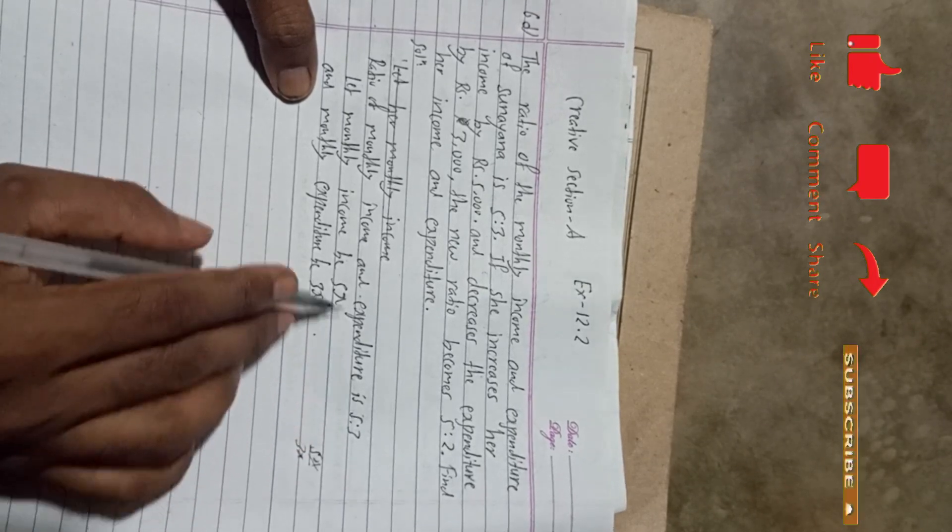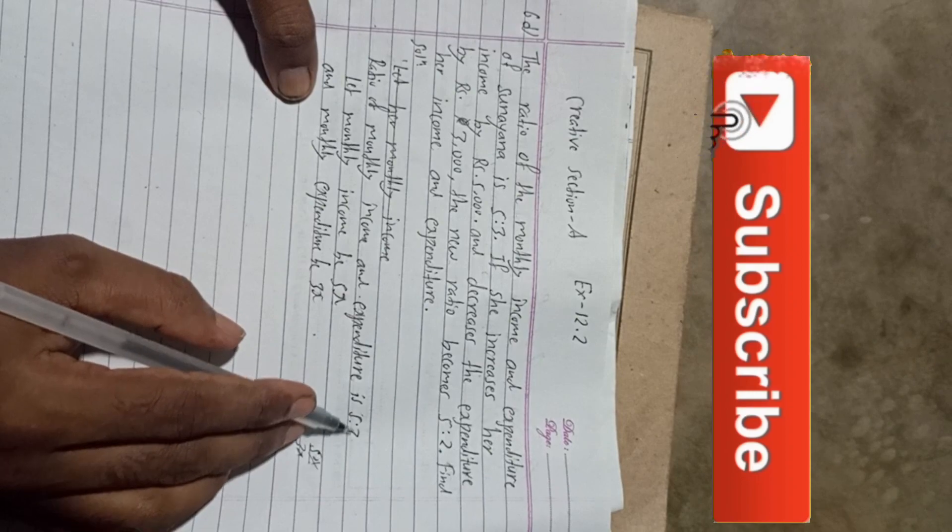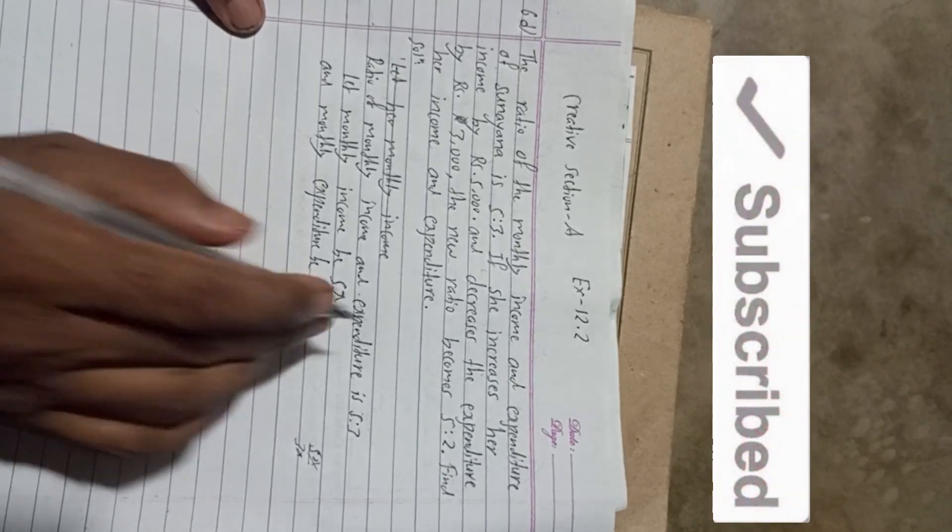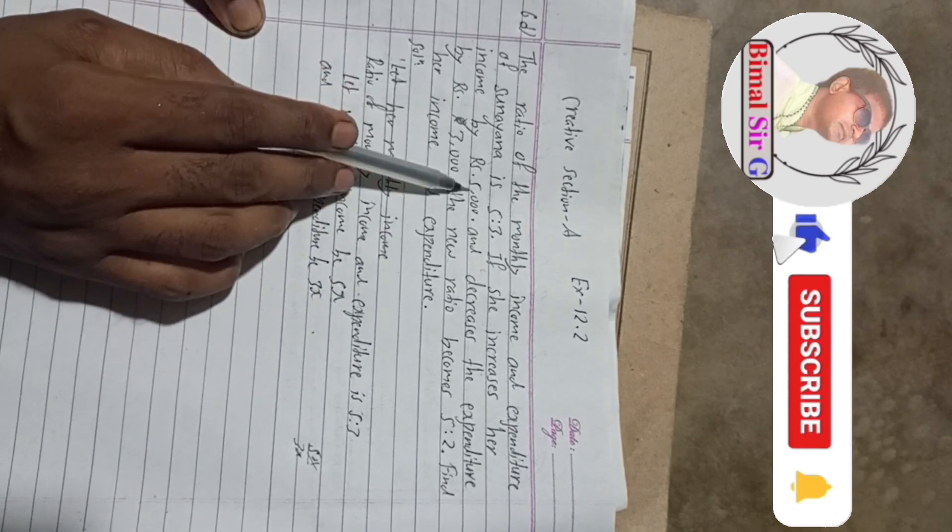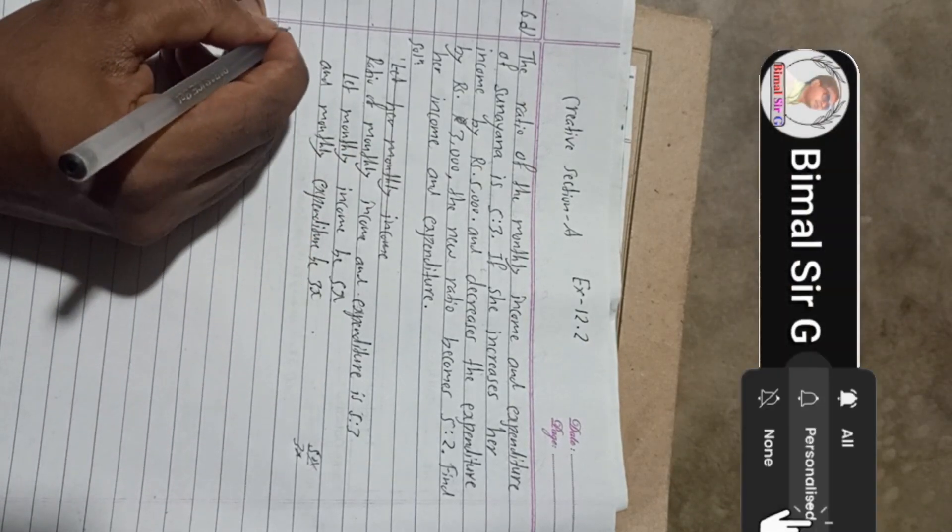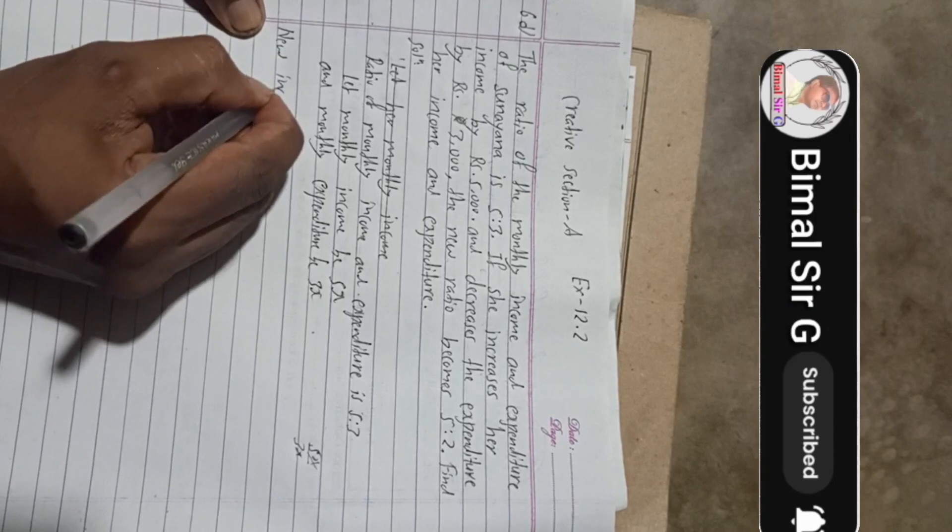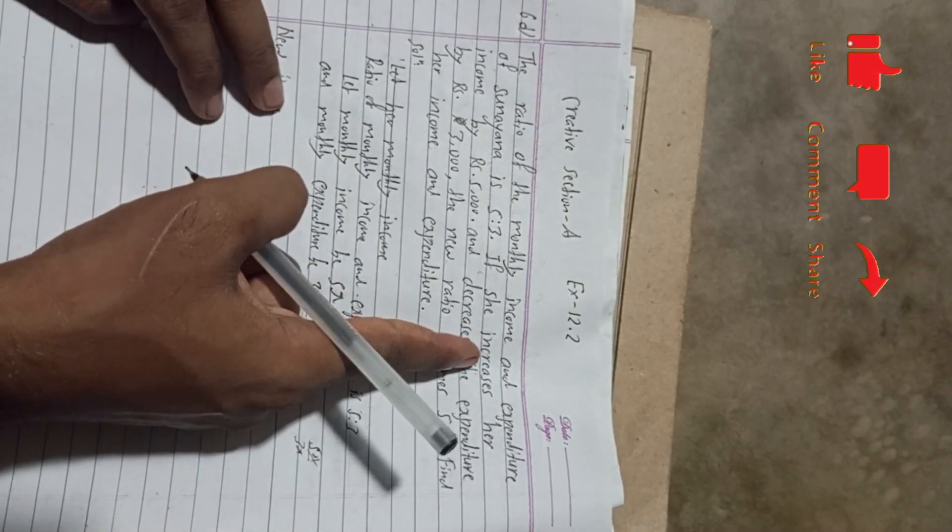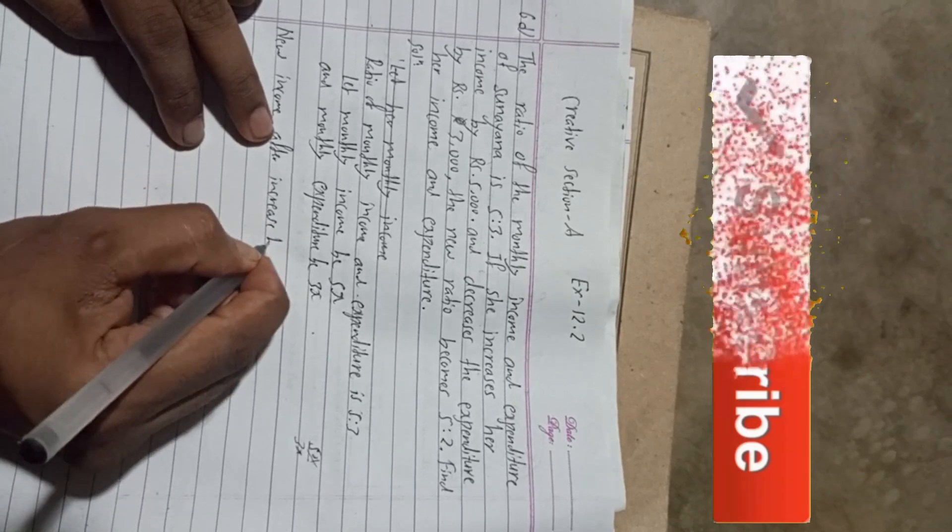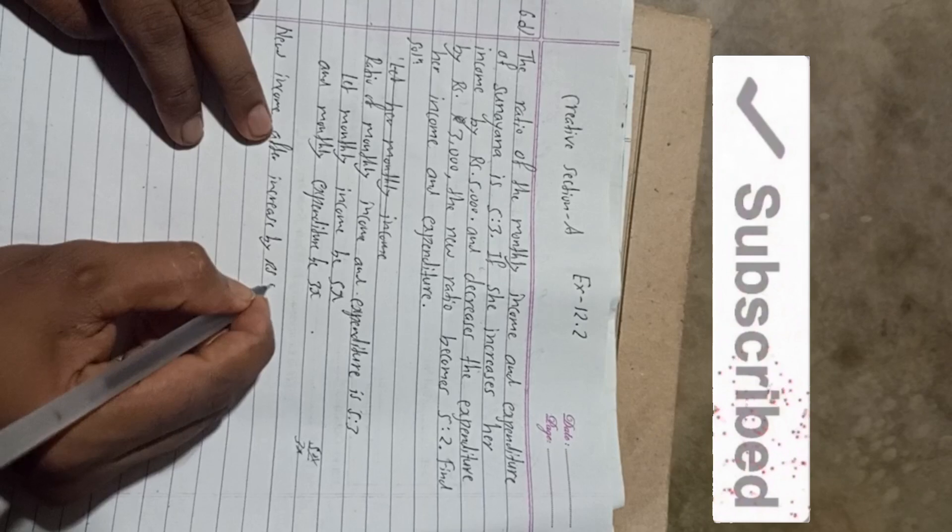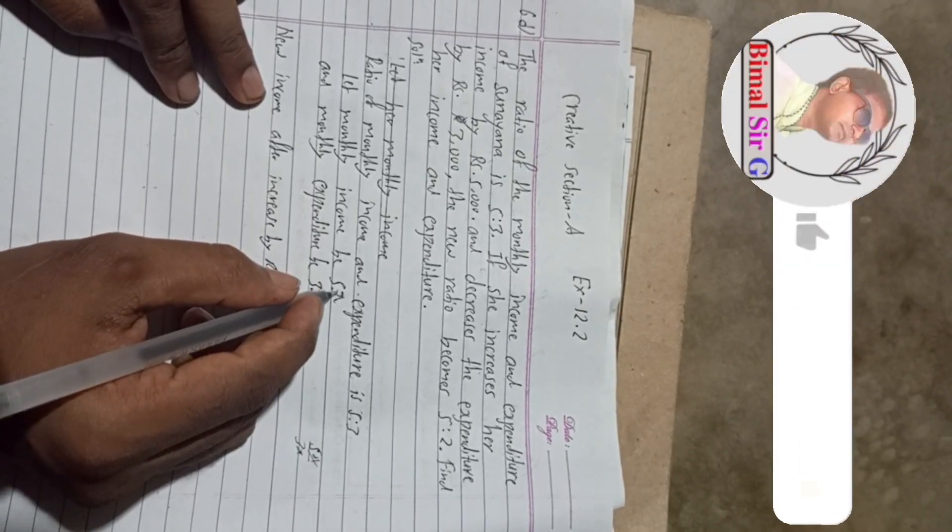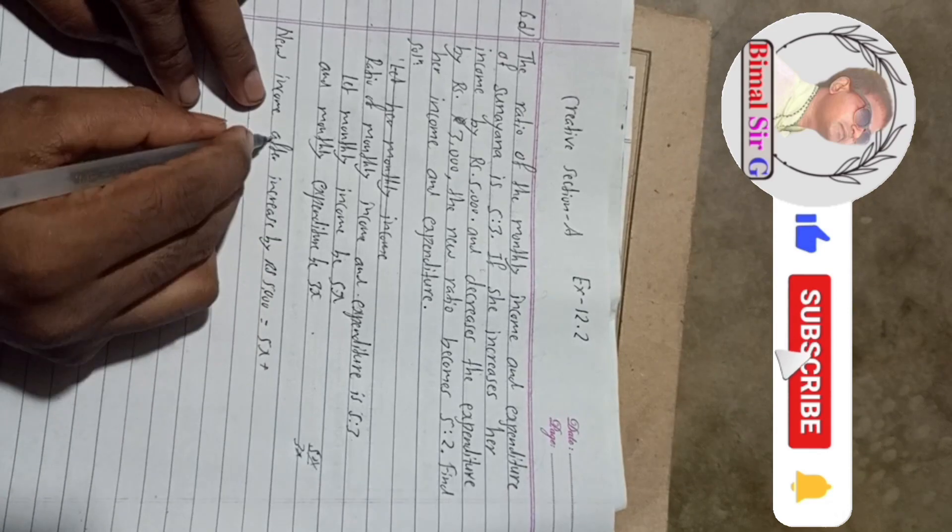So from this given ratio, we can write here 5y, 3y. We can also write 5Y, 3Y or 5K, 3K like that. Now, the condition is given there. If she increase her income by Rs 5,000, her income increase by 5,000. So we can now write new income. New income after increase by 5,000.